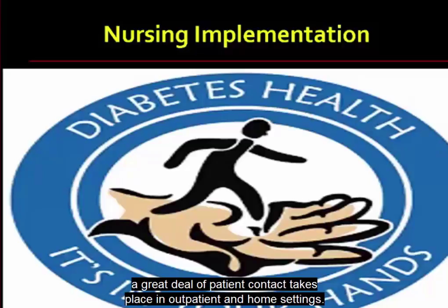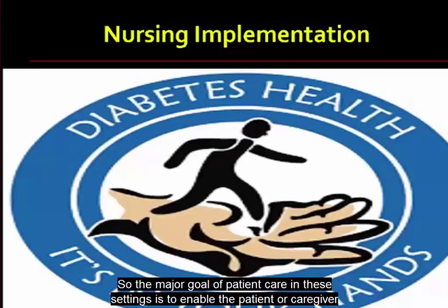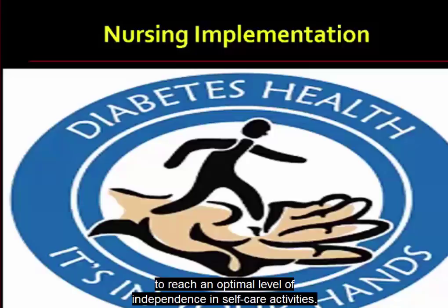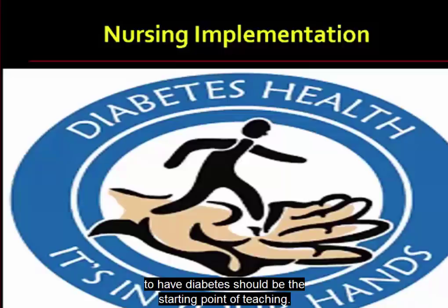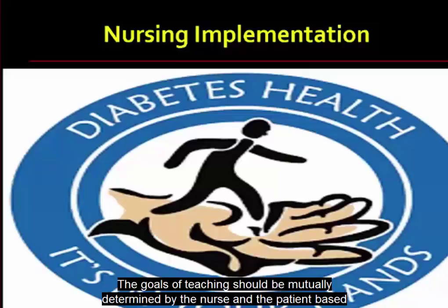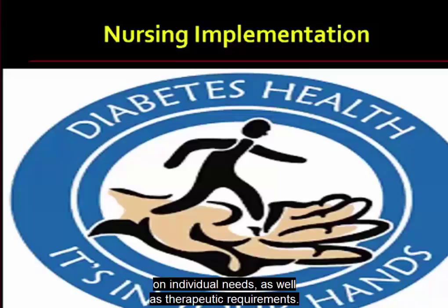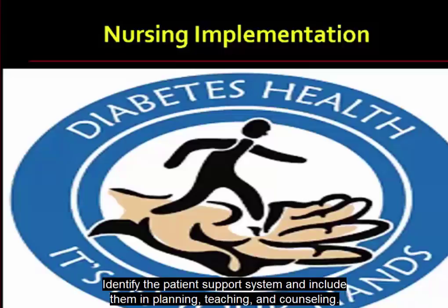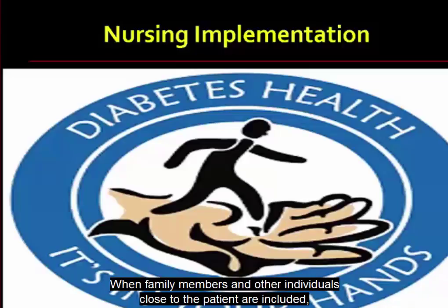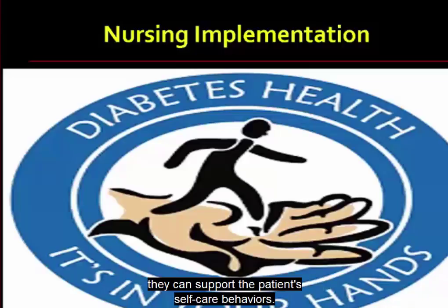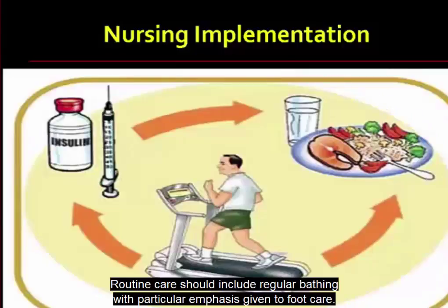Because diabetes is a complex chronic condition, a great deal of patient contact takes place in outpatient and home settings. The major goal of patient care in these settings is to enable the patient or caregiver to reach an optimal level of independence and self-care. Careful assessment of what it means to the patient to have diabetes should be the starting point of teaching. Goals should be mutually determined by the nurse and the patient based on individual needs and therapeutic requirements. The patient's support system should be identified and included in planning, teaching, and counseling.